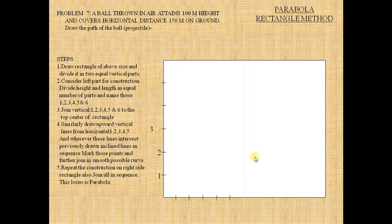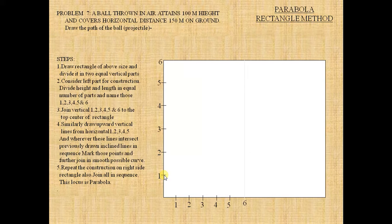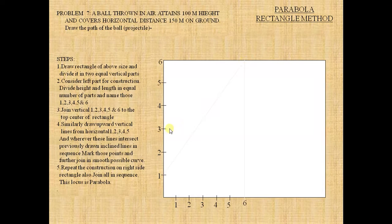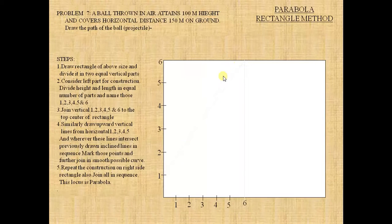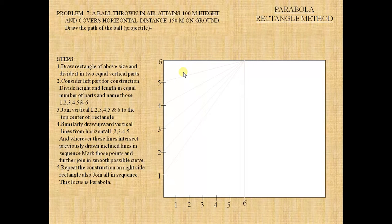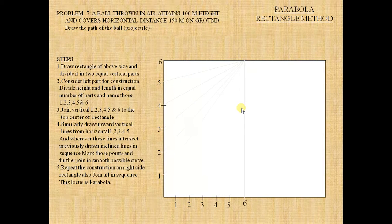And numbering them as one, two, three, four, five, six. And now, join the one of length part and the top edge here, I am showing you. And two to two here, and two to three here. See, four to here, five to here. Remember this point carefully. So here we are going to draw the same procedure on the right side.